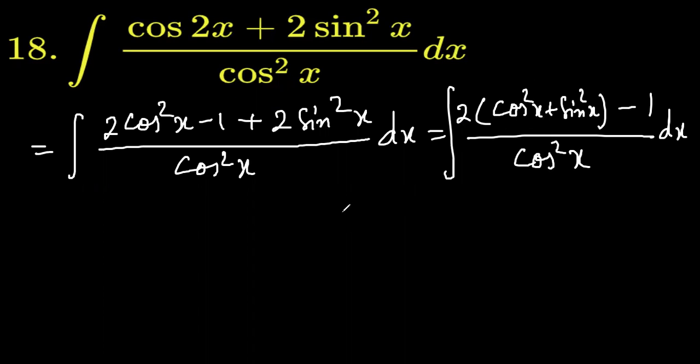Now this is 1, so 2 minus 1. That equals integration of 2 minus 1, because cos square x plus sine square x is 1, divided by cos square x.